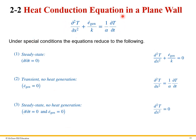Further simplifications can be made to this plane wall equation. For steady-state conditions, temperature is not a function of time, so the right-hand side equals zero. If there's no heat generation inside the material, the e-gen term is zero. If both conditions hold — steady state and no heat generation — the equation reduces to a simple differential equation that's easily solvable. You must carefully read the problem statement to determine which simplification applies.